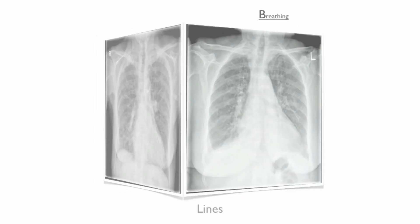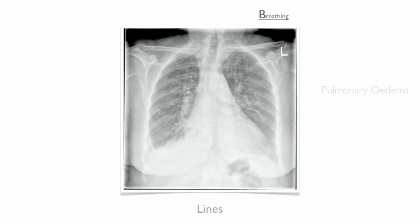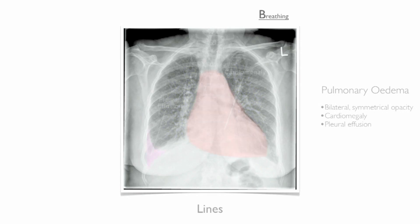The second presentation is pulmonary edema. Pulmonary edema presents as bilateral symmetrical opacity. There may also be cardiomegaly and pleural effusion present.